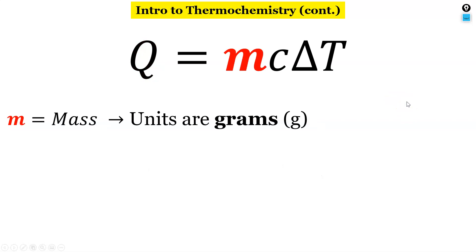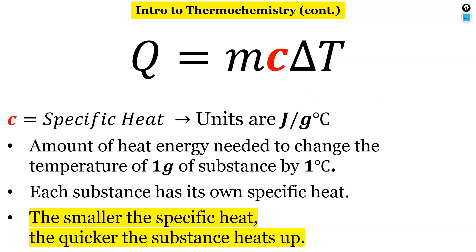The m stands for mass in this equation. The units of mass are just going to be grams. C stands for specific heat. The units for specific heat are joules over grams times degrees Celsius. And specific heat is the amount of heat energy needed to change the temperature of one gram of substance by one degree Celsius.